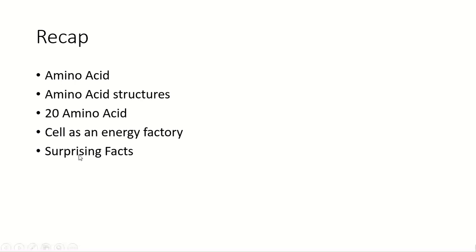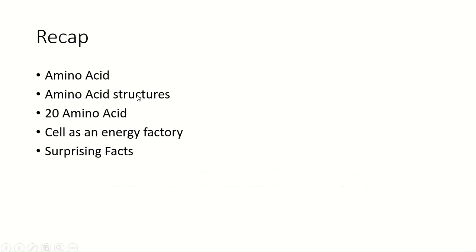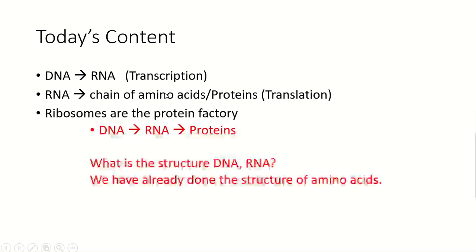We have also discussed about some surprising facts. Today's content: we will discuss about the central dogma of molecular biology. The final product of DNA — the central dogma of molecular biology — is that the DNA molecule is a genetic or hereditary material, and when it converts into RNA, this process is called transcription. Then the transformation of RNA into proteins is called translation, and we will discuss this in detail.